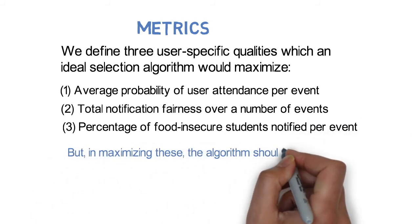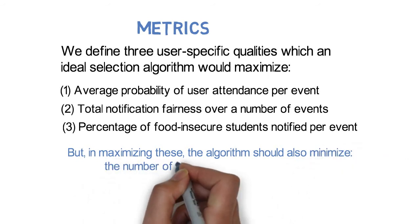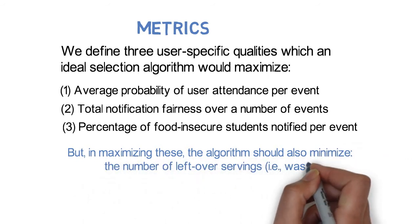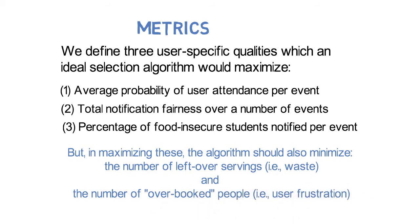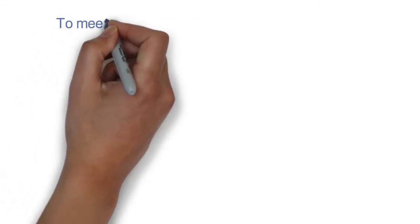Additionally, when we try to maximize these metrics, the algorithm should also minimize the number of leftover servings and the number of overbooked people, which would increase user frustration.